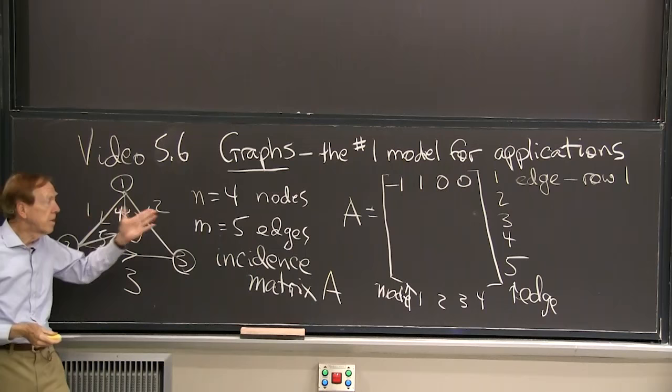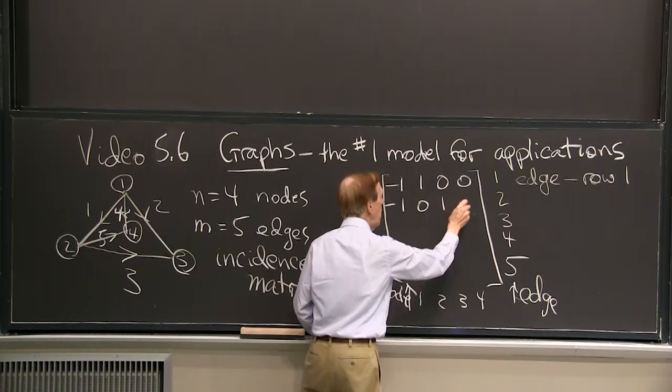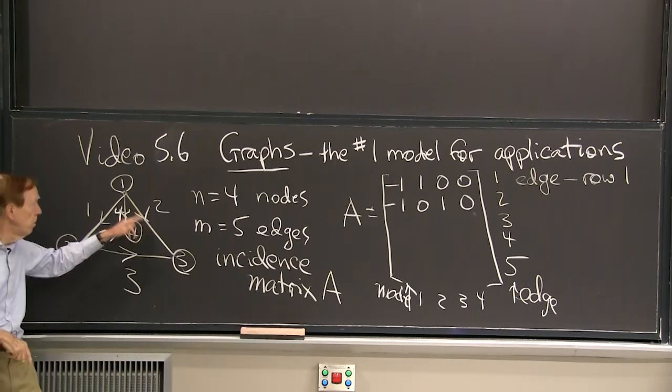And so that edge goes from node one to node two. So I put a minus one and a one. And it doesn't touch nodes three and four. That's edge one. That's row one. Now that tells me everything I see about edge one. Edge two goes from one to three. So I'll put a minus one, a zero, and a one in row two.